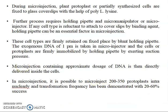During micro injection, plant protoplasts or partially synthesized cells are fixed to a glass cover slip with the help of poly-L-lysine. Before starting the experiment, we need to attach the protoplast to a slide using lysine. Further, the process requires a holding pipette and micromanipulator or micro injector. If any cell type is allowed to attach to the cover slip by a binding agent, a holding pipette can be an essential factor in micro injection.